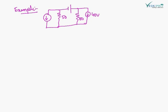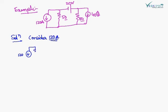Take another example. This is a current source of 120 Ampere. This is a 40 Volt source — sorry, this is a 40 Ampere current source. The resistances are 150 Ohm and 50 Ohm, and this is 20 Volt. Now we will solve this. First, we will consider the 120 Ampere source. This voltage source is going to be short circuited.